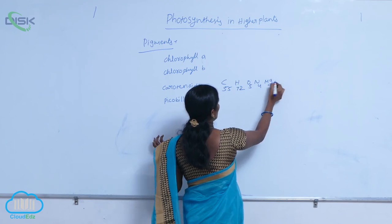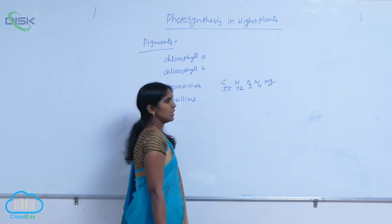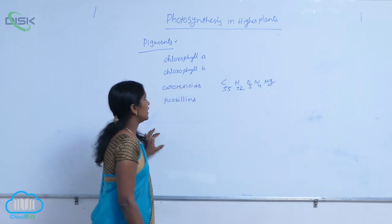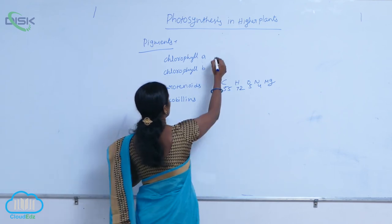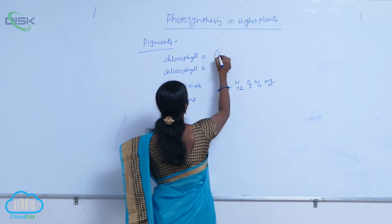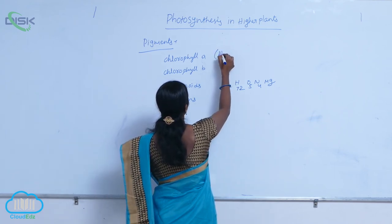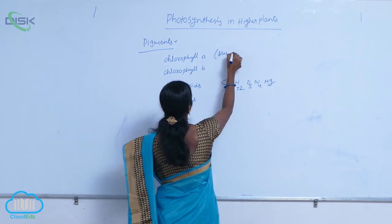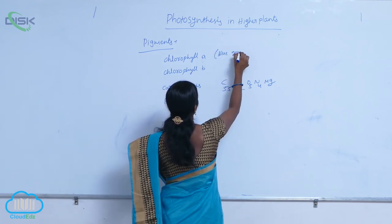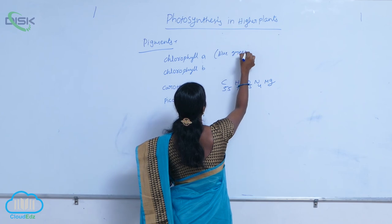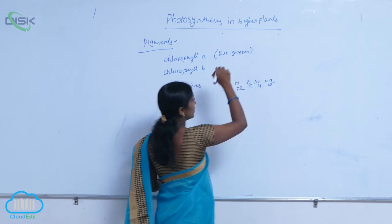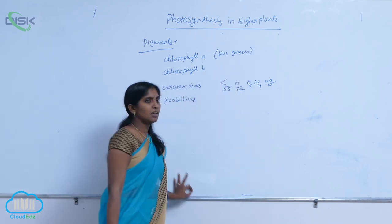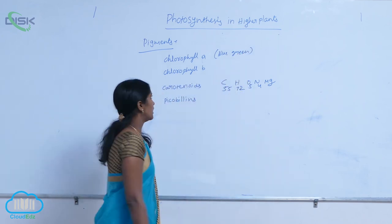Chlorophyll A gives the color blue-green.